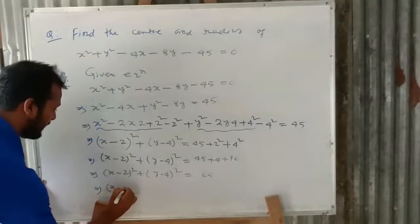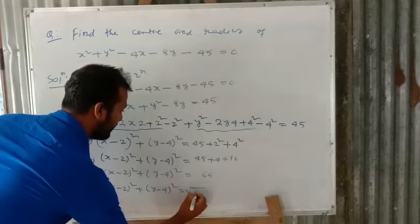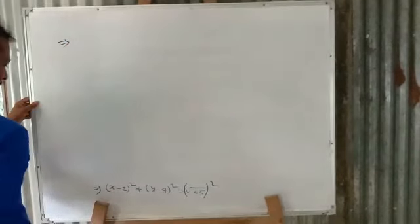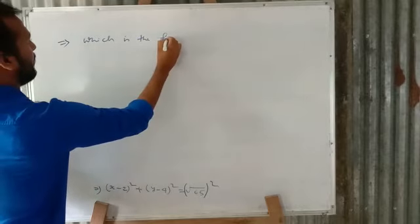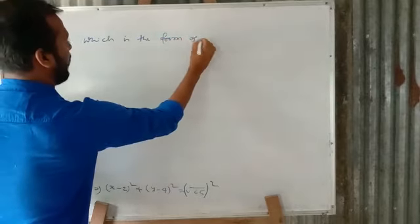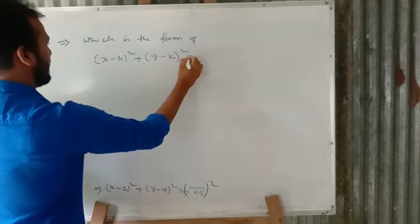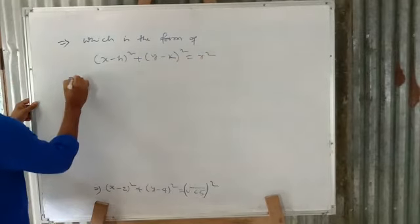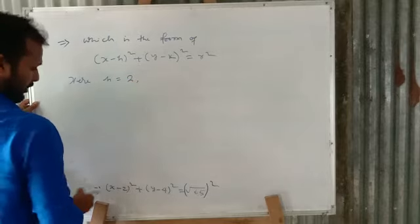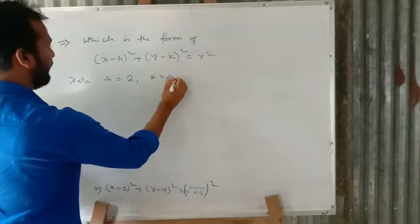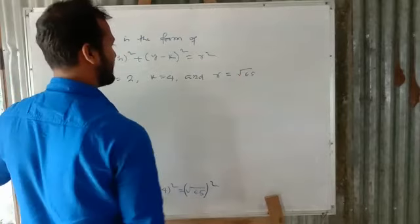This implies (x − 2)² + (y − 4)² = (√65)², which is of the standard form (x − h)² + (y − k)² = r². Here h = 2, k = 4, and r = √65.